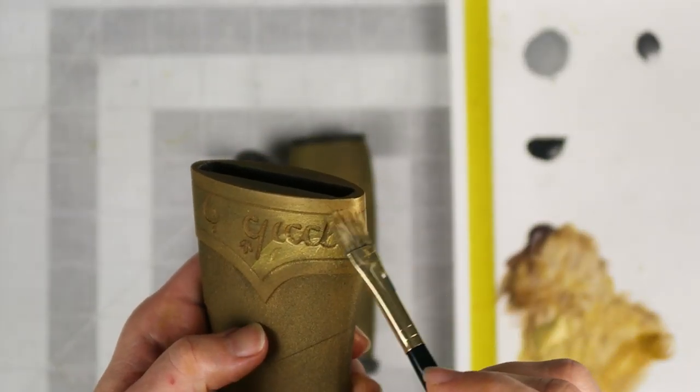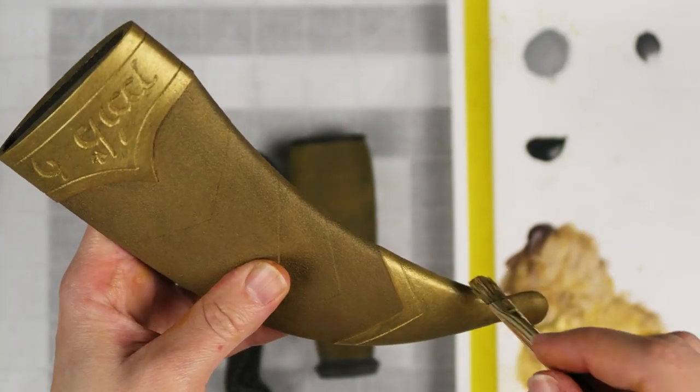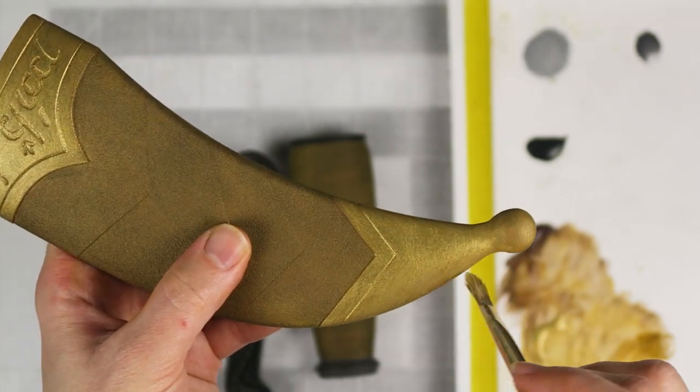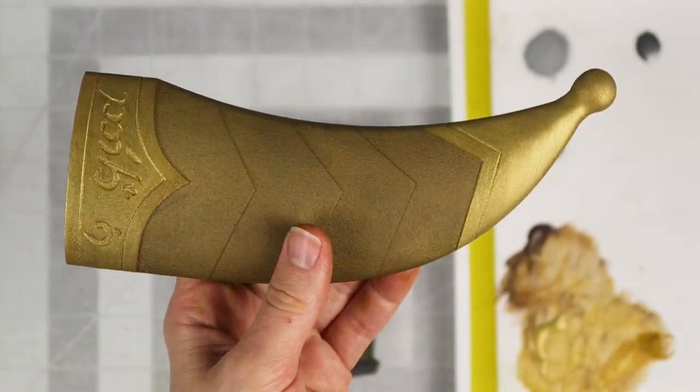On the scabbard, I've focused the gold tone onto the top and the bottom. In the center area, I've left more muted, so that looks like it's made with a different material, possibly a leather.